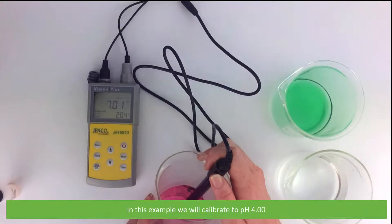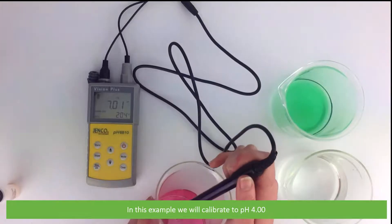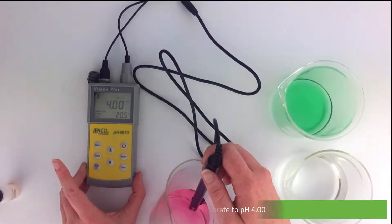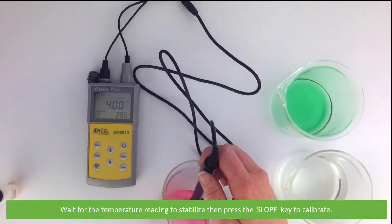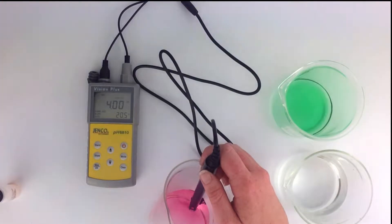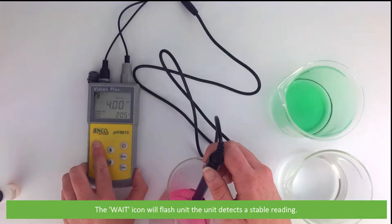In this example, we will be calibrating the second buffer to pH 4.00. Wait for the temperature reading to stabilize, then press the slope key to calibrate. The wait icon will flash until the unit detects a stable reading.